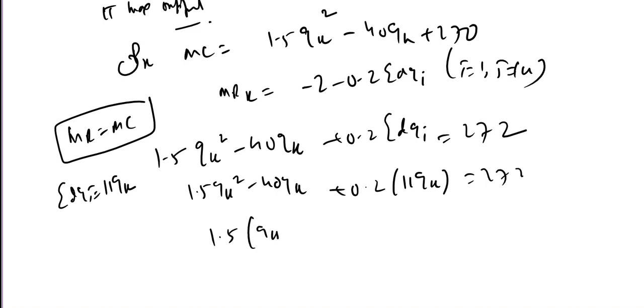Now simplify: 1.5 Q_k square minus 40 Q_k plus 2.2 Q_k equal to 272. So 1.5 Q_k square minus 37.8 Q_k equal to 272.